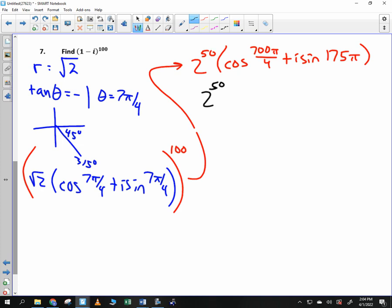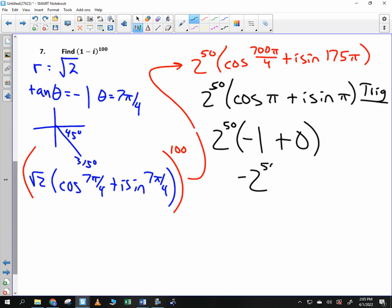2 to the 50th times the cosine of pi plus i sine of pi. That is trig form. To finalize our lesson for the day and to see if we match Gavin's answer, we will place this into complex form. What is the cosine of pi? Negative 1. And what is the sine of pi? Times i would be 0. So notice if we distribute the 2 to the 50th through, or just negative 1 plus 0 is negative 1, you get negative 2 raised to the 50th power. And that is complex form.